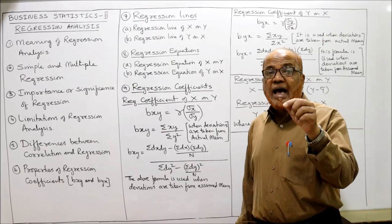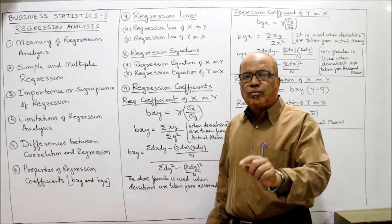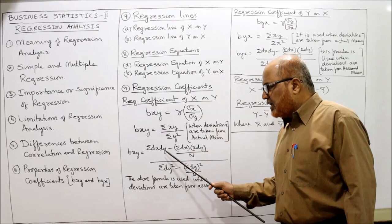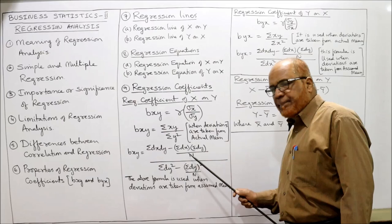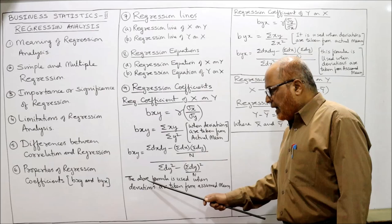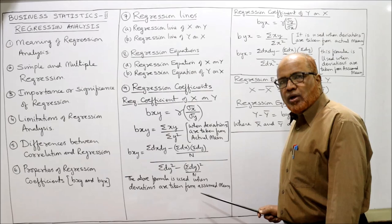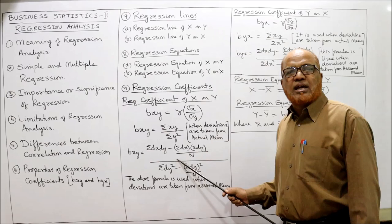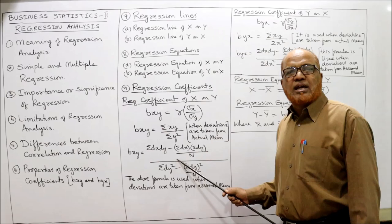When deviations are taken from the assumed mean, the formula becomes: Bxy = [Σ(dx·dy) − (Σdx · Σdy)/n] / [Σdy² − (Σdy)²/n]. This formula is used when the mean is a fraction and we take deviations from an assumed mean. So the three formulas for Bxy depend on what information is given in the problem: r and standard deviations given, individual values with actual mean deviations, or individual values with assumed mean deviations.